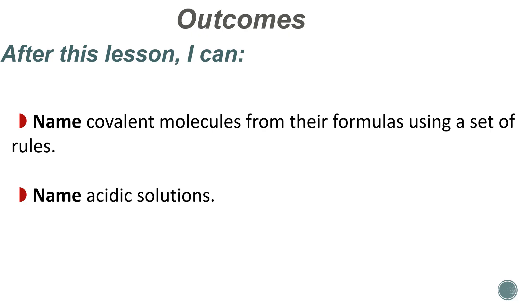After this lesson, you should be able to name covalent compounds from their formulas using a set of rules — meaning I give you the formula and you write the name, or I give you the name and you write the formula. And we'll also cover naming acidic solutions.